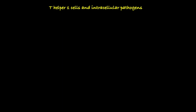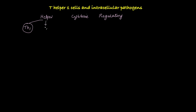This video is about T helper 1 cells and intracellular pathogens. T cells are grouped as helper T cells, cytotoxic T cells, and regulatory T cells. The helper T cells are further classified on the basis of cytokines they produce. So there are TH1 cells, TH2 cells, TH17, and T follicular helper cells.